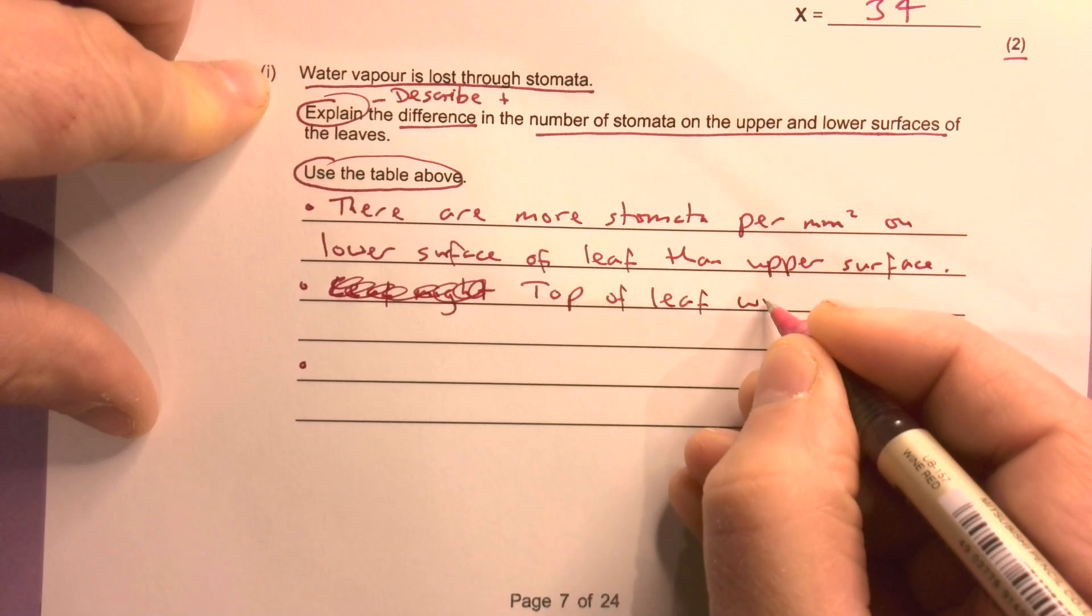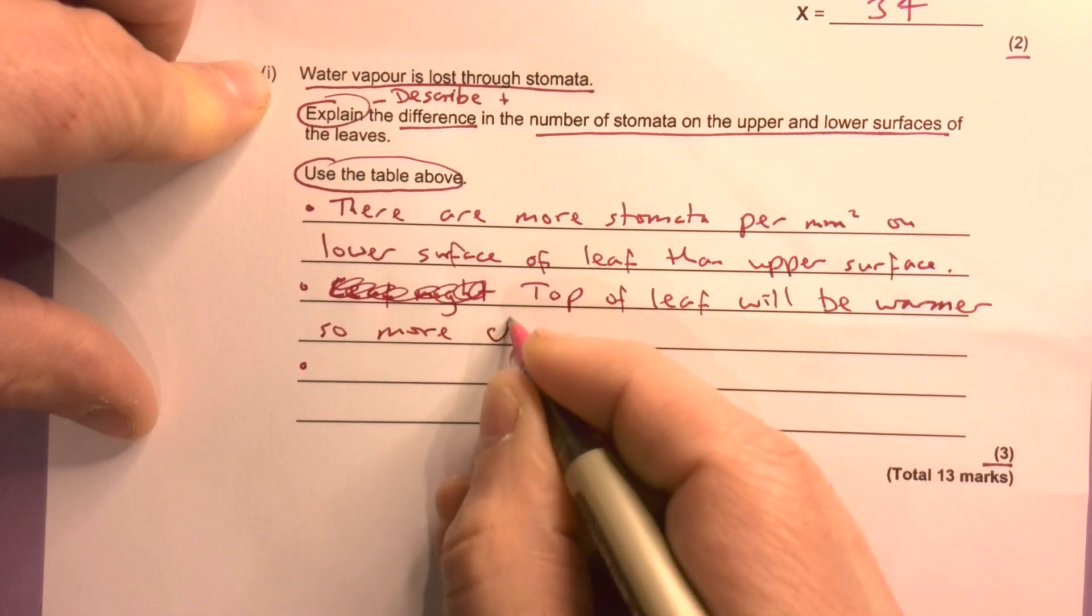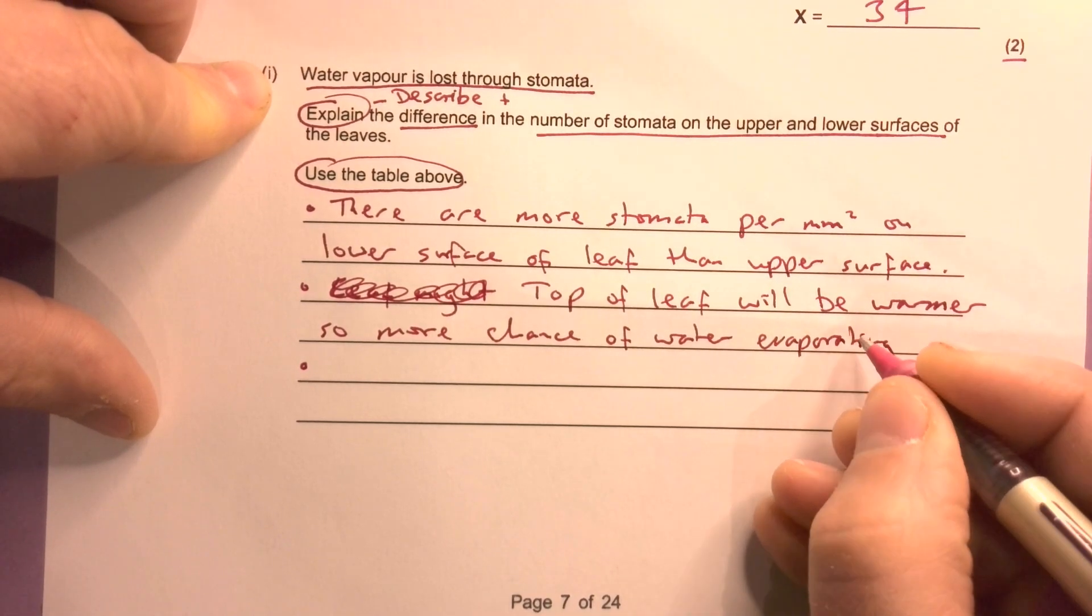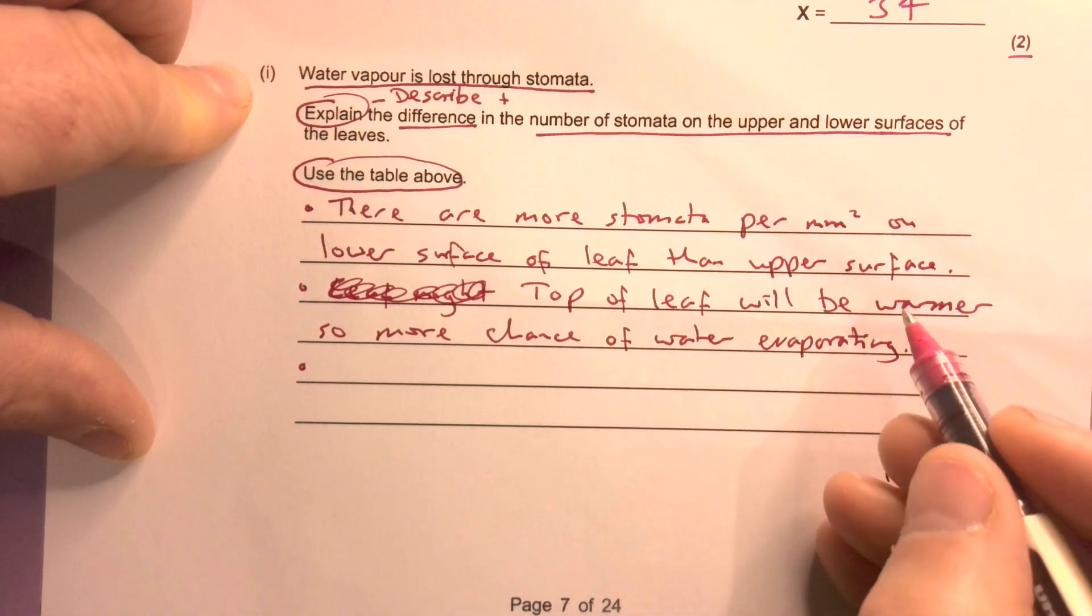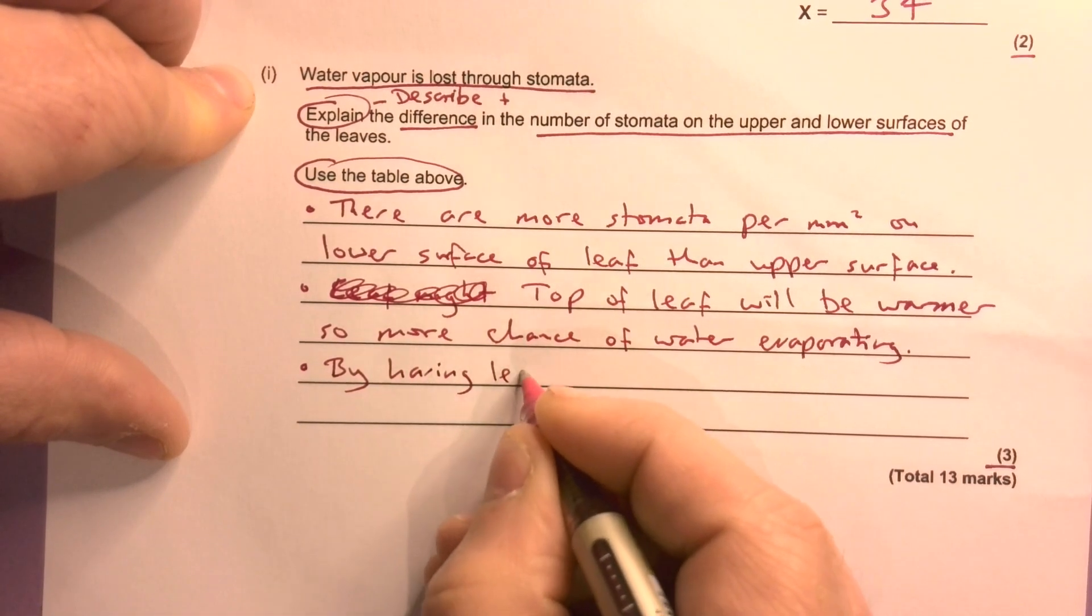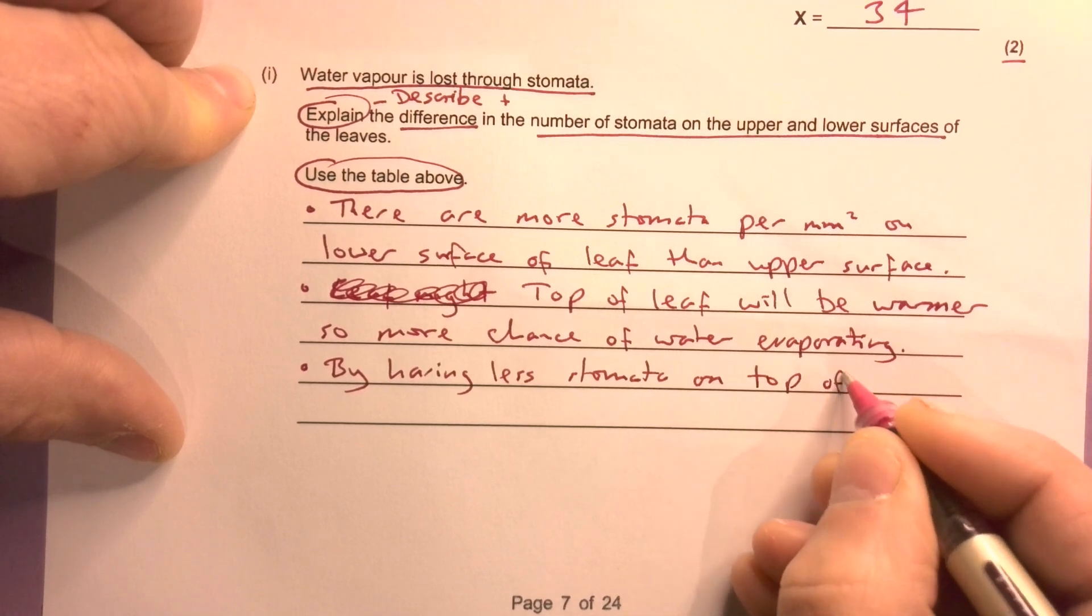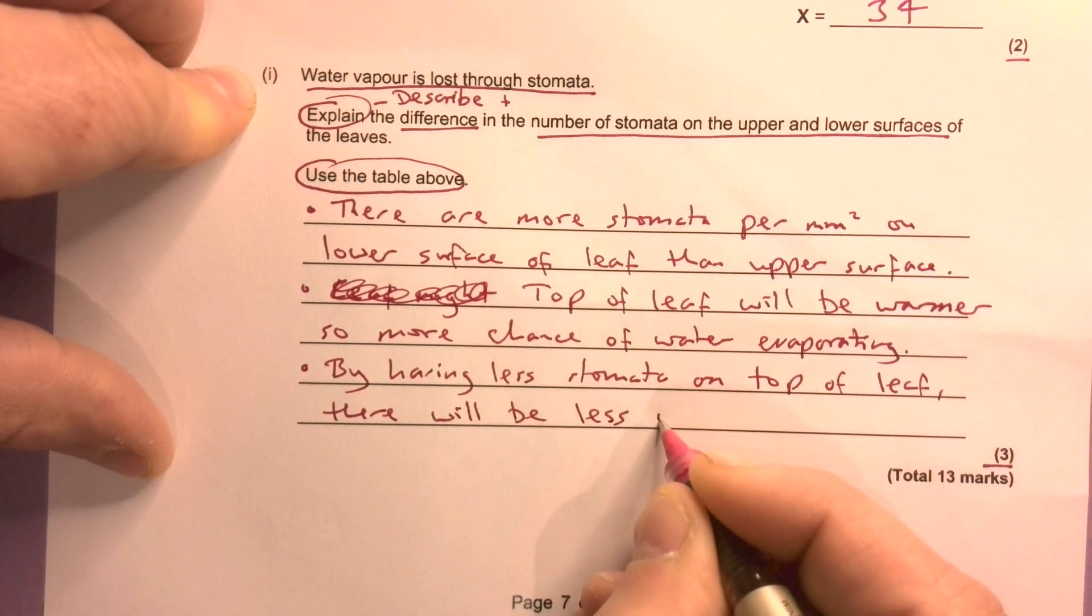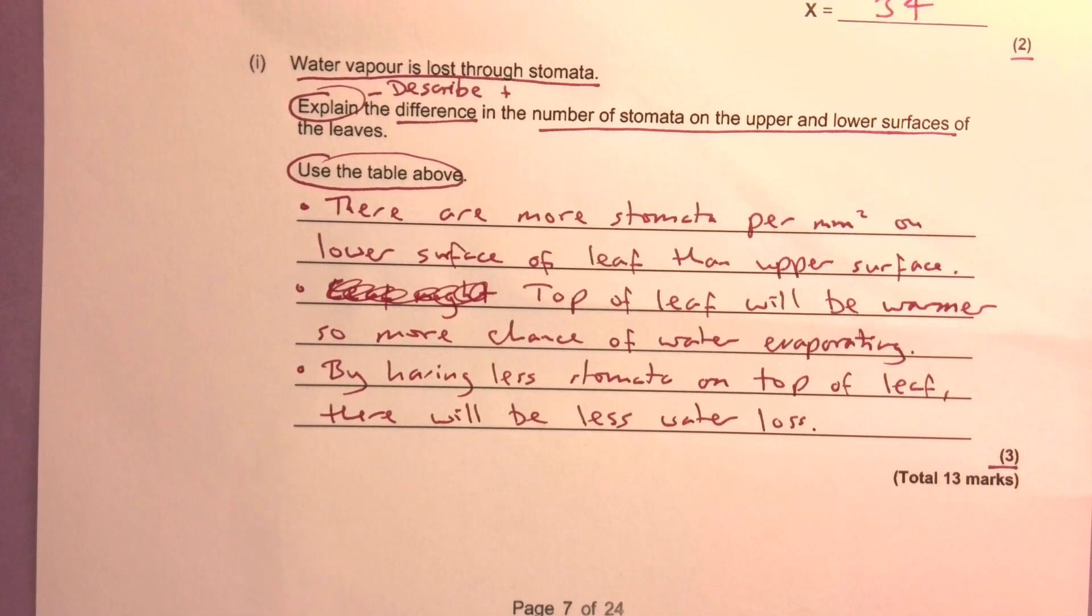Because it's in the sunlight. Top of leaf will be warmer, so more chance of water evaporating. The top of the leaf will be hotter - it's also drier, there's more wind, there's more light, therefore it will be warmer. So by having less stomata on top of leaf, there will be less water loss. Plants have adapted to have fewer stomata on the top of the leaf surface so they don't lose as much water.